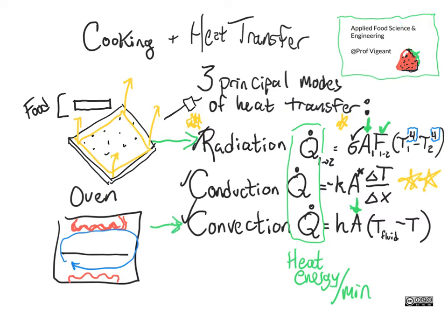Let's talk about convection. For convection, we need that surface area again, and we have a constant — a different constant. This constant has to do with how fast the air in our oven is moving around, the shape of what we've put in the oven, and a few other things. So we're going to treat it as a constant — it's not even really constant, actually, but be that as it may.